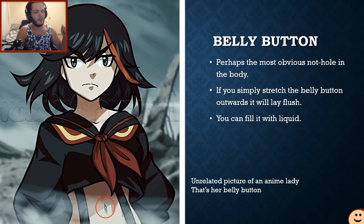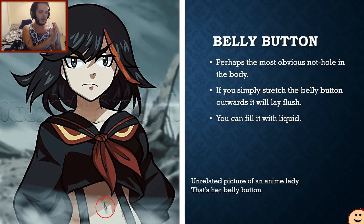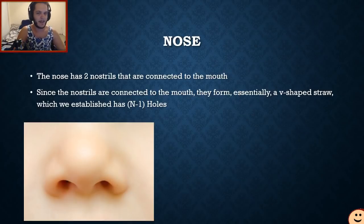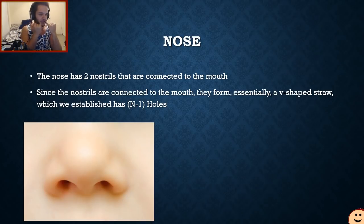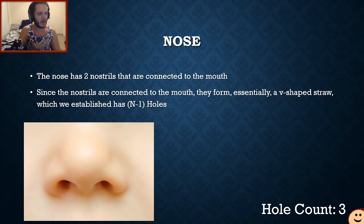The belly button is quite possibly the most common non-hole in the body. People think it's kind of a hole, but you can fill it with liquid, and if you squish it all the way out into the stomach it would roll flush — so it doesn't count. Our hole count is still one. The nose has two nostrils, the nostrils are connected to the mouth, and since we already established the mouth is a straw shape with the anus, the nose adds two more holes. Our total hole count is now three.